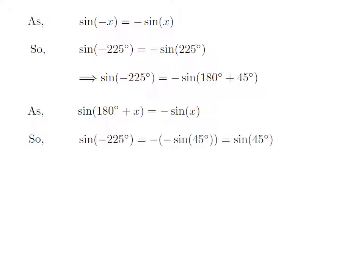Let us apply the above identity for sine of 180 degrees plus 45 degrees. Here, x is 45 degrees. So, sine of minus 225 degrees is equal to minus of minus sine of 45 degrees, which is equal to sine of 45 degrees, as minus of minus is plus.